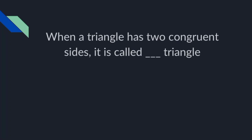When a triangle has two congruent sides, it is called a dash triangle. Congruent means identical, similar, or same.